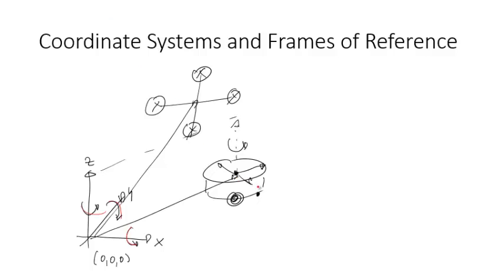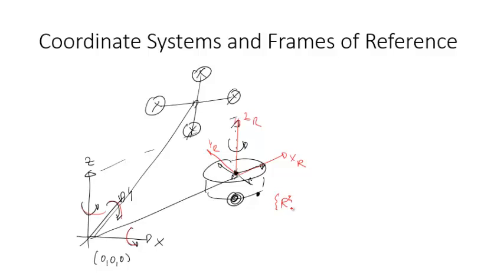So we just learned how we can define a coordinate system and define the position and orientation of the robot therein. But what about if you are interested in things that happen locally to the robot? So what we can do is we can put another coordinate system on top of the robot, which would have an x-axis, a z-axis, and a y-axis. Now I have labeled every vector here with the index r, which denotes that we are talking about the robot frame.